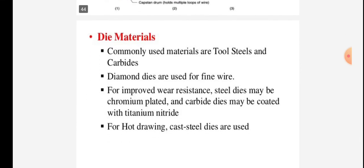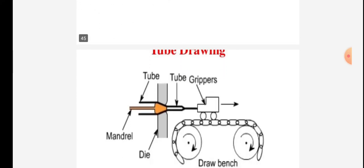Die materials are as follows: the most commonly used metals are tool steels and carbides. Diamond dies are used for fine wires. For improved wear resistance, steel dies may be chromium plated and carbide dies may be coated with titanium nitride. For hard drawing, cast steel dies are used.